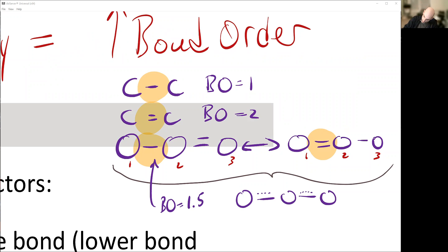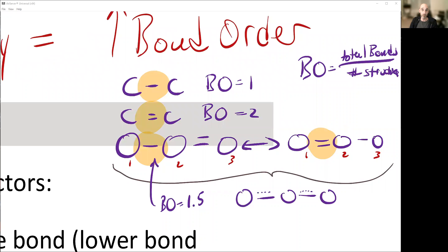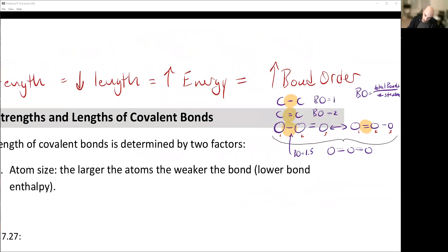So bond order equals total bonds divided by number of structures. So triple bond would be a bond order of three.